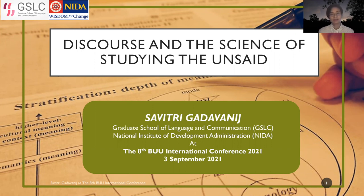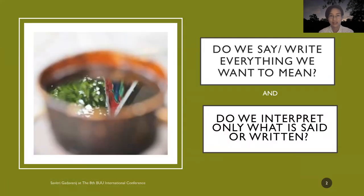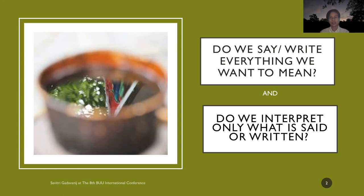At this level, language is judged by how it conveys meaning, so the concept of meaning is central. There are two questions to ask: Do we say or write everything we want to mean? And do we interpret only what is said or written? We all come to the same conclusion that we don't say everything we mean, and we don't mean everything we say. So the issue of form — what appears in the text — and the issue of meaning diverge at this level.